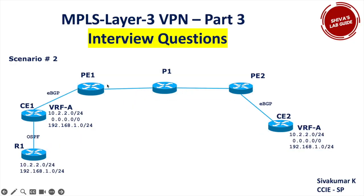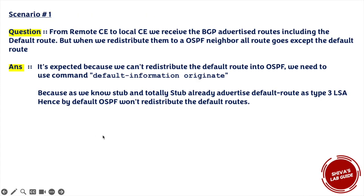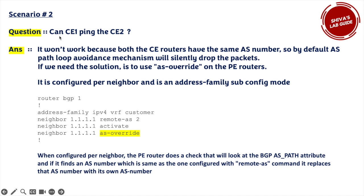The problem lies between CE1 and R1 — CE1 advertises the routes but the default route alone doesn't go into OSPF because 'default-information originate' is needed. That is the answer. However, as a person taking the interview, they may also expect you to demonstrate how to verify routes received on a PE, sent from one PE to a remote PE, and how to verify the remote CE receives them — those checkpoints are also important.